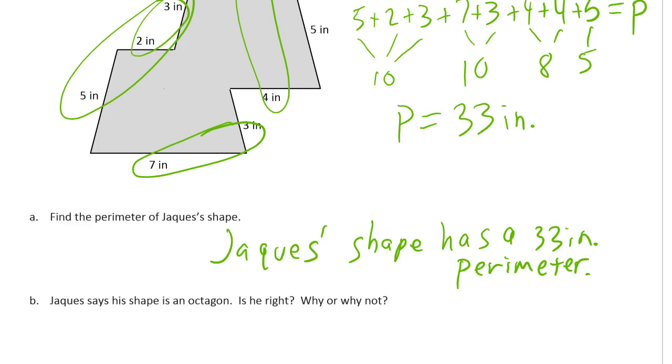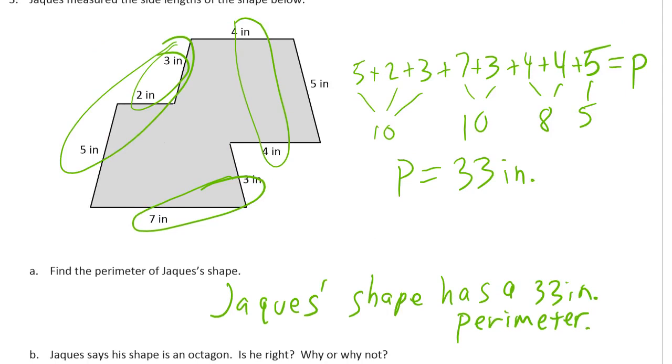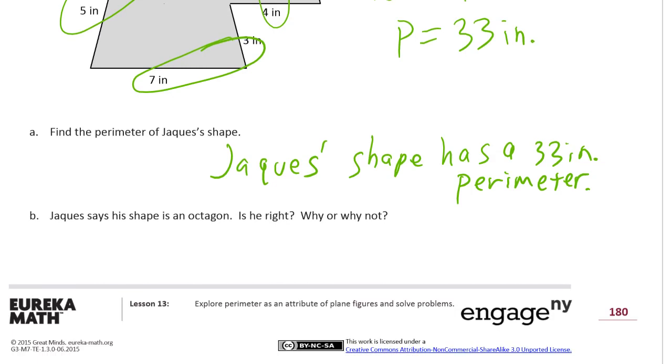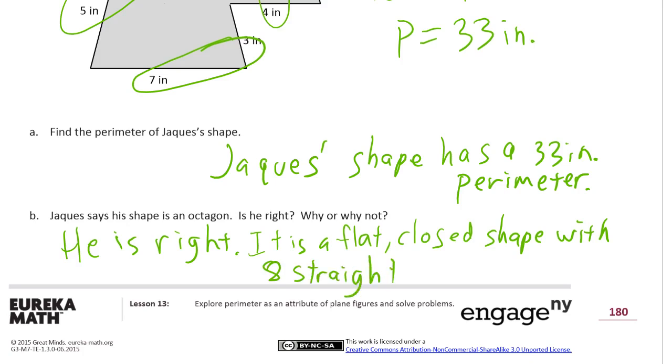Jacques says his shape is an octagon. Is he right? Why or why not? Well, didn't we just count how many sides there were, right? 1, 2, 3, 4, 5, 6, 7, 8. Yes, it has 8 sides. He is right. And if you want to get the extra points, you could just say it has 8 sides. But you could say it is a polygon with 8 sides. You don't have to write all this. You could just say it has 8 sides. That would be fine. It's a flat, closed shape with 8 straight sides.